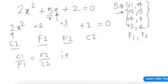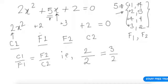That is: c1 = 2 divided by f1 = 2, should equal f2 = 3 divided by c2 = 2. Is it equal? The answer is no, and hence 2 and 3 cannot be the factors. So let's try the others.